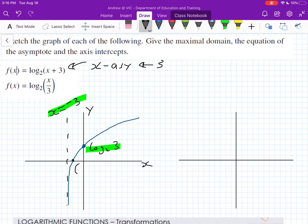Normally it goes through 0, 1. Sorry, 1, 0. So this one here will go through negative 2, 0. Just one away from our asymptote.